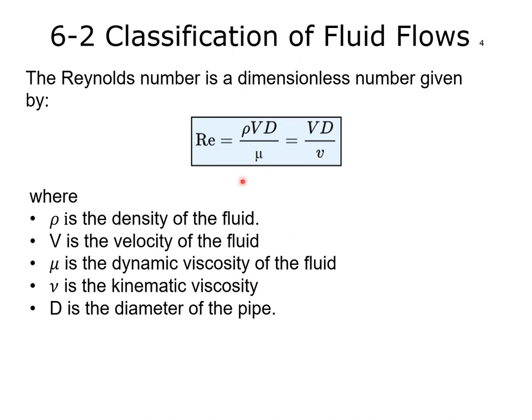The Reynolds number is a dimensionless quantity. Rho is the density of the fluid, V is the velocity, D is the diameter of the pipe, and mu is the dynamic viscosity.